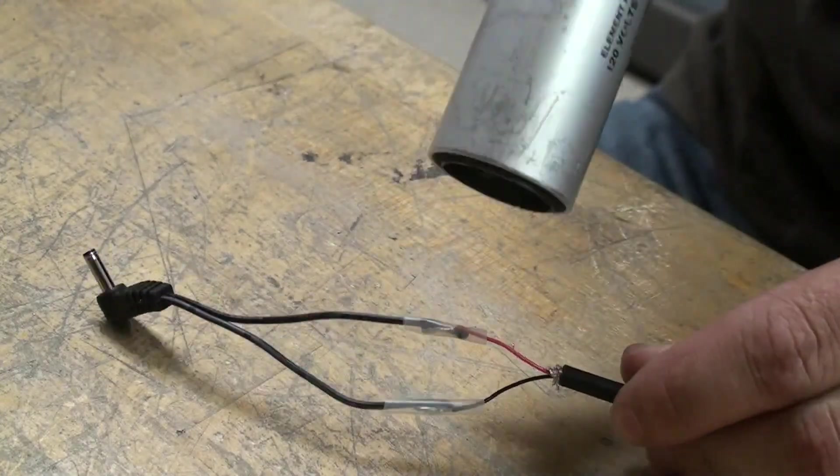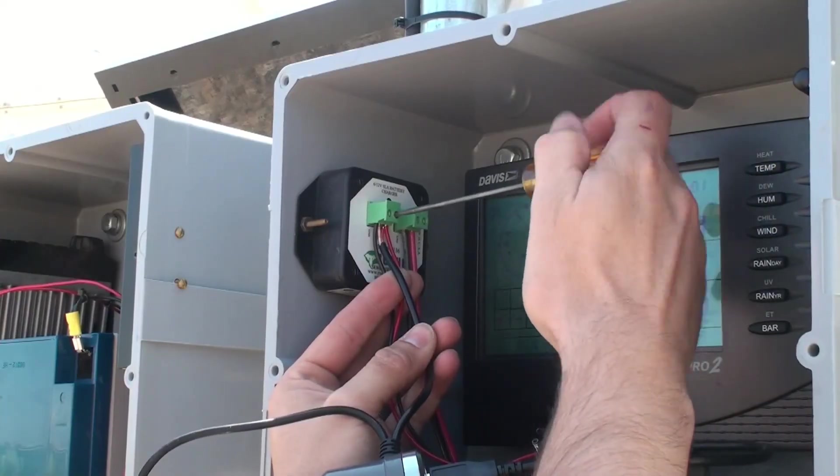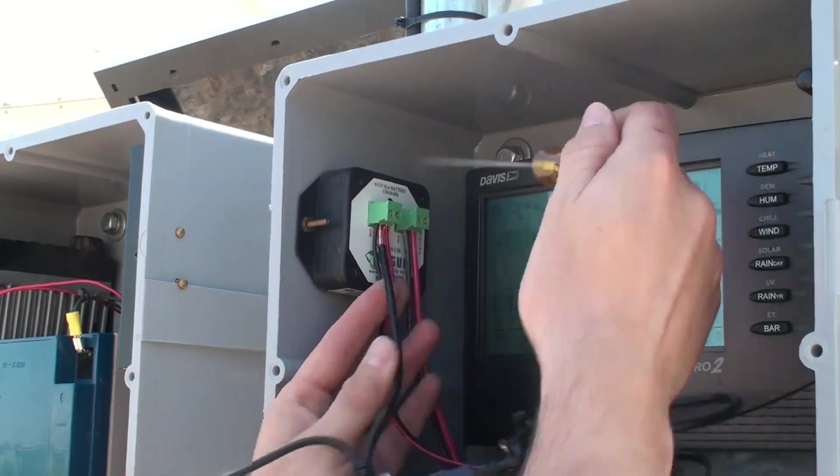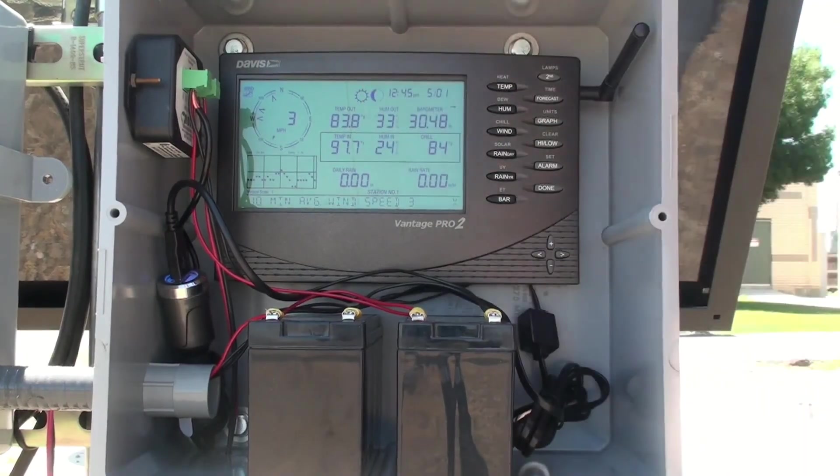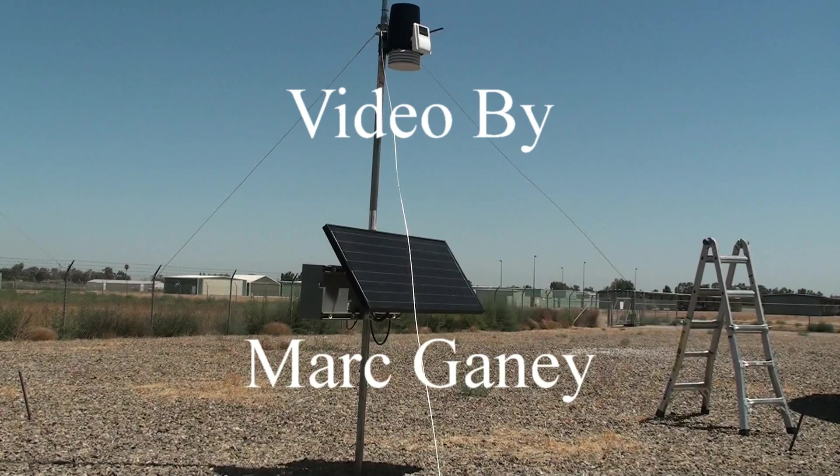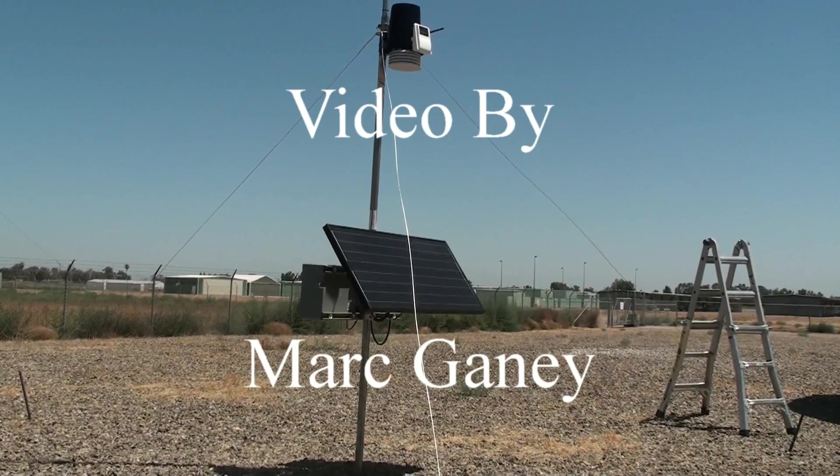Connect the 12 volt leads to the charge controller, battery terminals, and the USB cord to your weather console. You can now put the electronics box covers on. With the system now complete, I hope you found this informative, and thanks for watching.